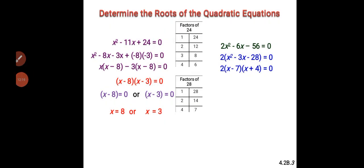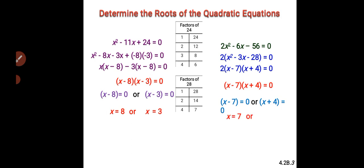Therefore, we have X minus 7 in brackets times X plus 4 in brackets equals zero. So, X minus 7 equals zero or X plus 4 equals zero. We have X is equal to 7 and X equals minus 4.